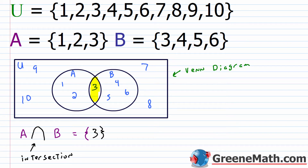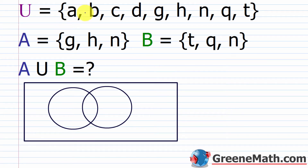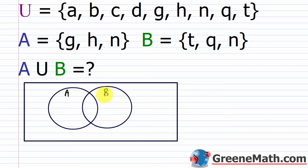Let's take a look at another example. We have a universal set containing elements a, b, c, d, g, h, n, q, and t — all lowercase to avoid confusion with set names. Set A contains g, h, and n. Set B contains t, q, and n. Filling in our Venn diagram: n is common to both A and B, so it goes in the overlap section. G and h go in A's side, and t and q go in B's side.